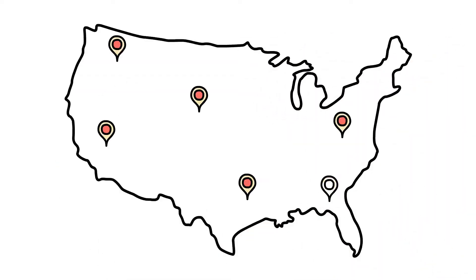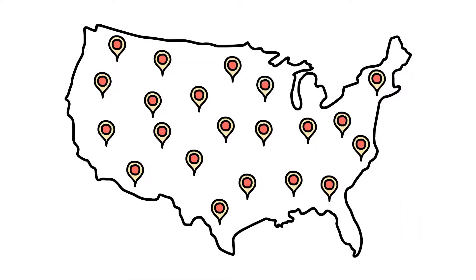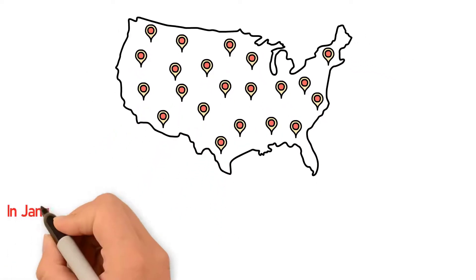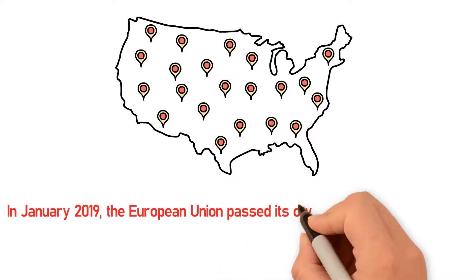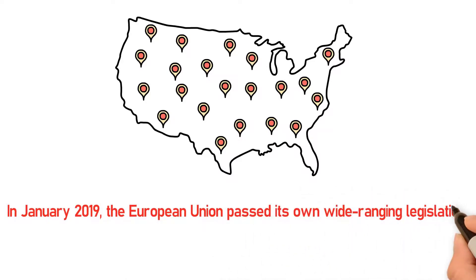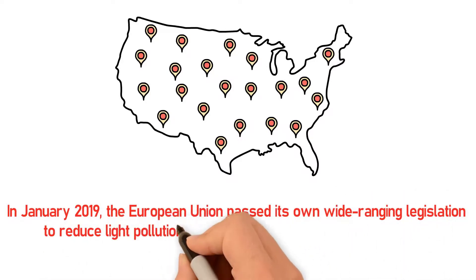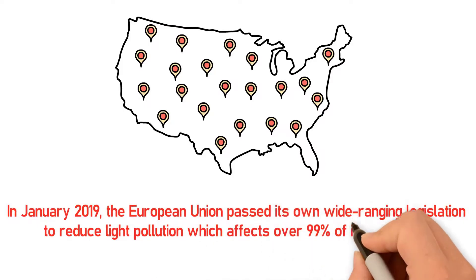Across the United States, there are 21 individual state mandates that limit the brightness or type of bulbs being used. In January 2019, the European Union passed its own wide-ranging legislation to reduce light pollution which affects over 99% of its population.